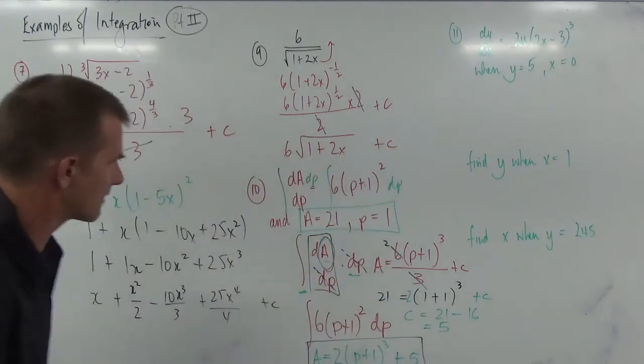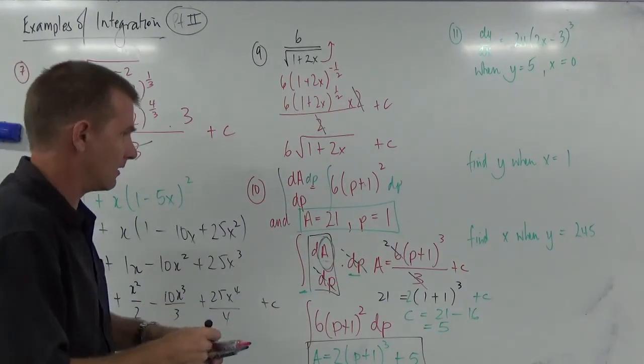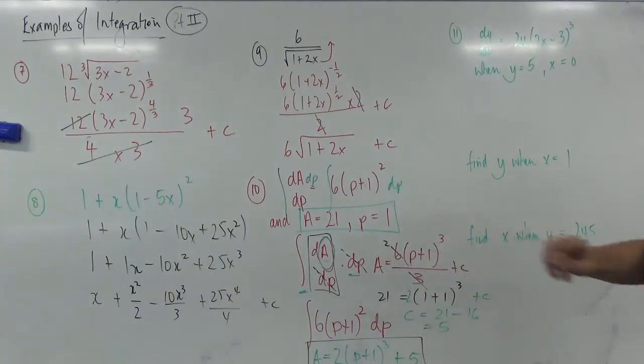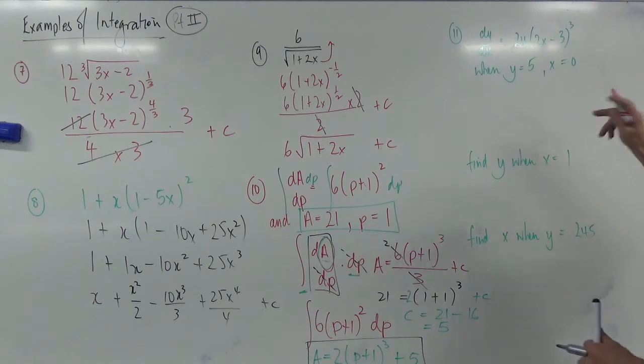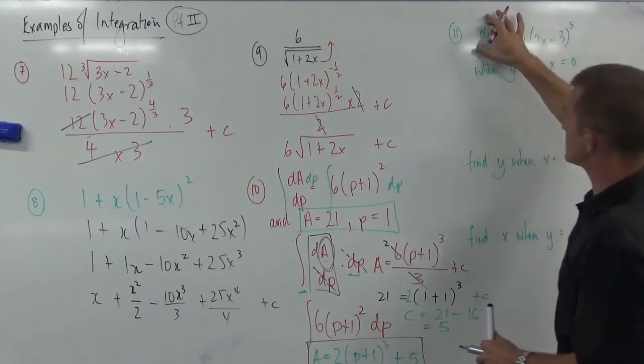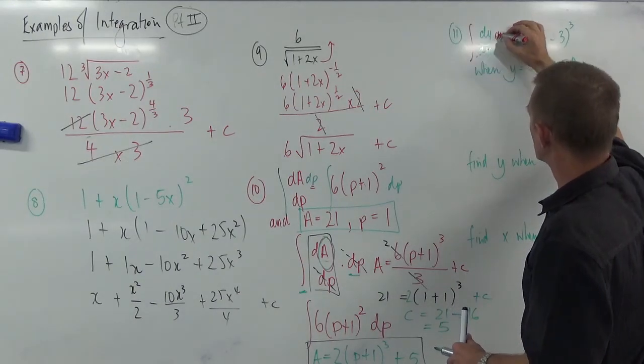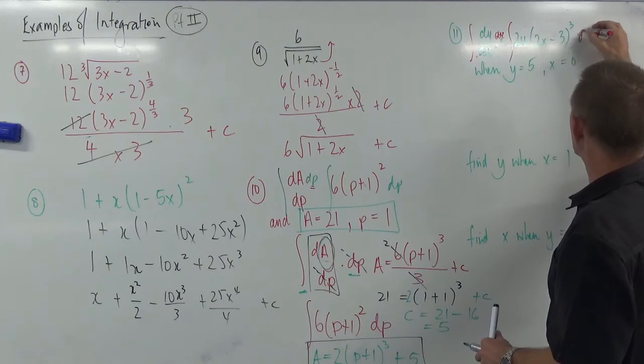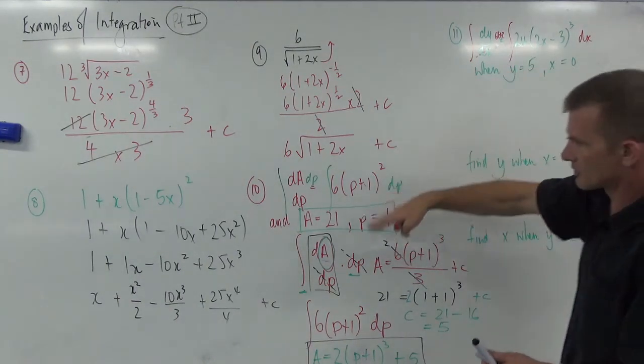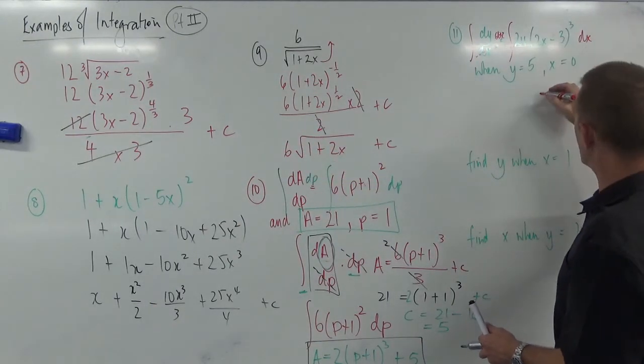Next one. Number 11. Similar style. I'll try and not make a mistake here. Here we go. We've got dy dx equals this. So, if I integrate this side with respect to x, and I integrate this side with respect to x, this is a little easier. Well, not so much. Same as this, but a little easier than these.